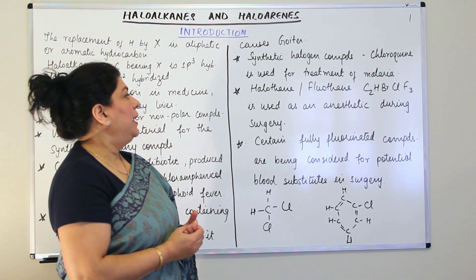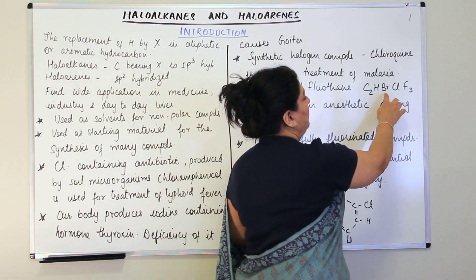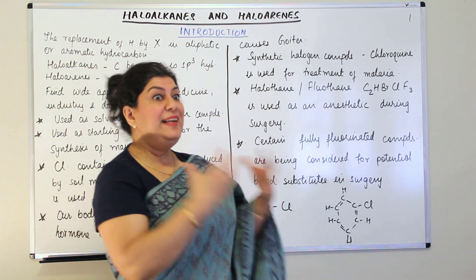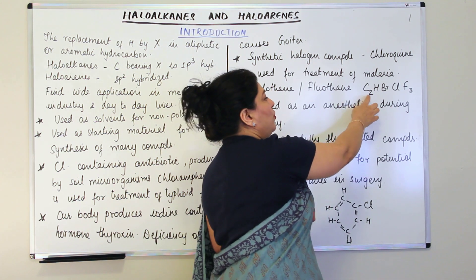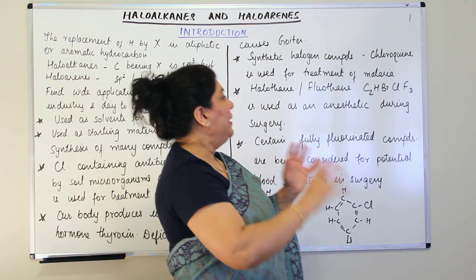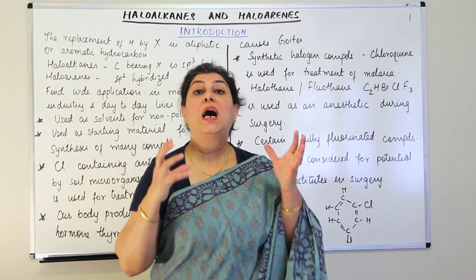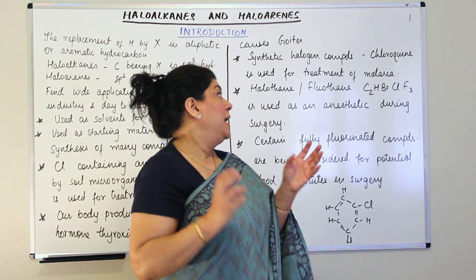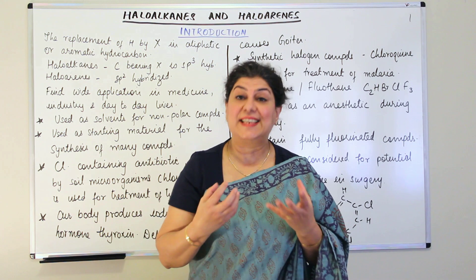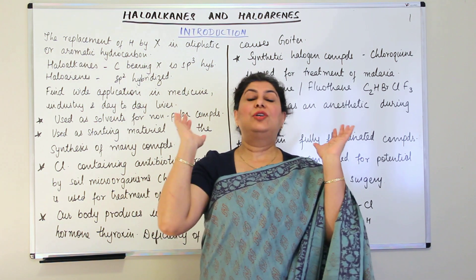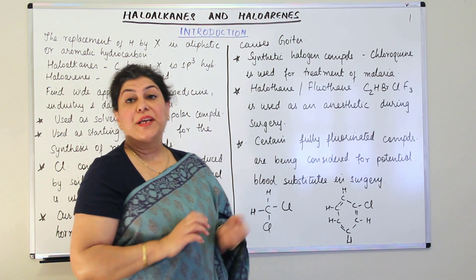Another example is halothane, also known as fluorothane, with the formula C2HBrClF3. It is a highly substituted hydrocarbon based on ethane, where the hydrogens have been substituted by bromine, chlorine, and three fluorines. Halothane is used as an anesthetic in surgery — it is used to render a person unconscious during surgical procedures.